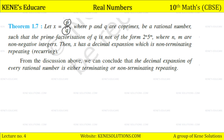From the discussion above we can conclude that the decimal expansion of every rational number is either terminating or non-terminating repeating.